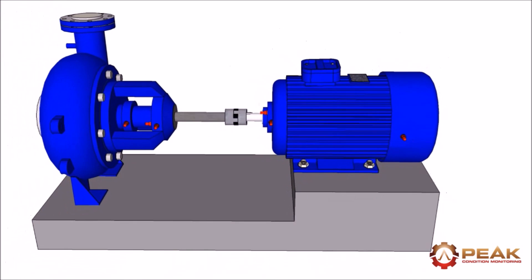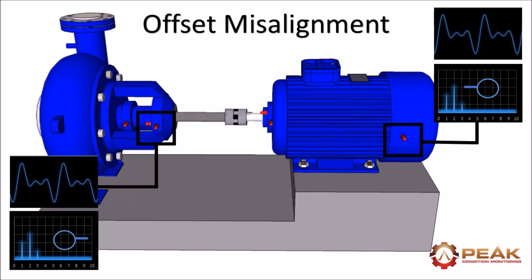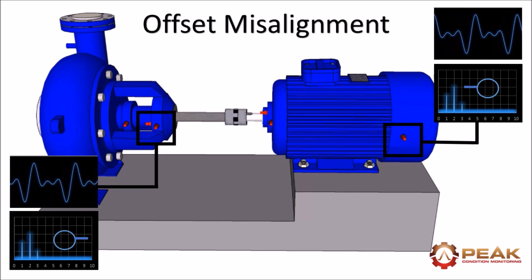Phase data is also critical when confirming offset and angular misalignment in equipment. If offset misalignment is present there will be peaks at 1x, 2x and 3x in the axial direction with the waveforms out of phase.